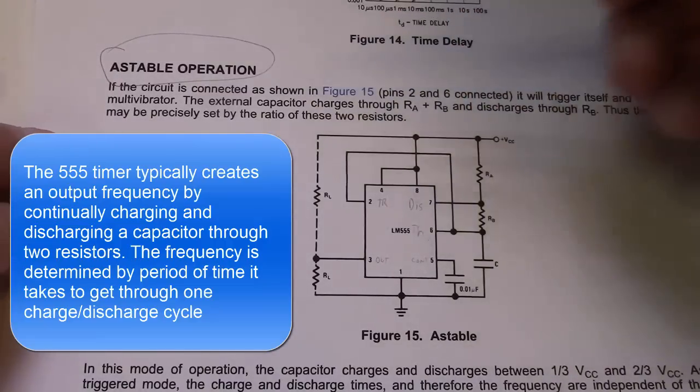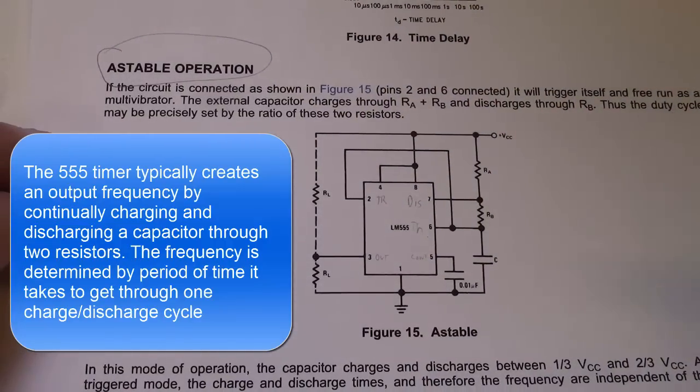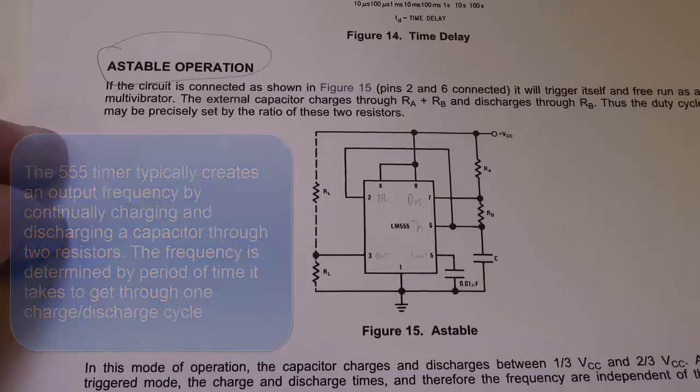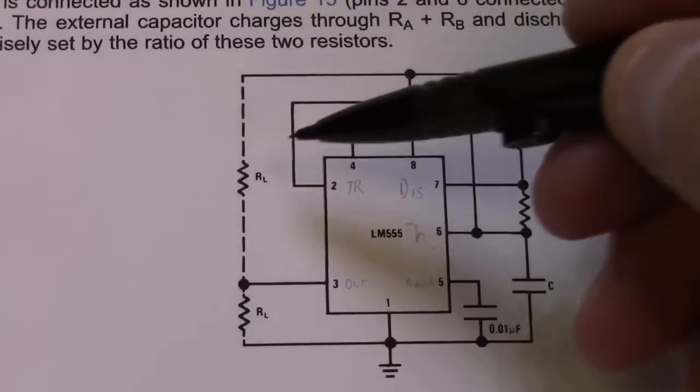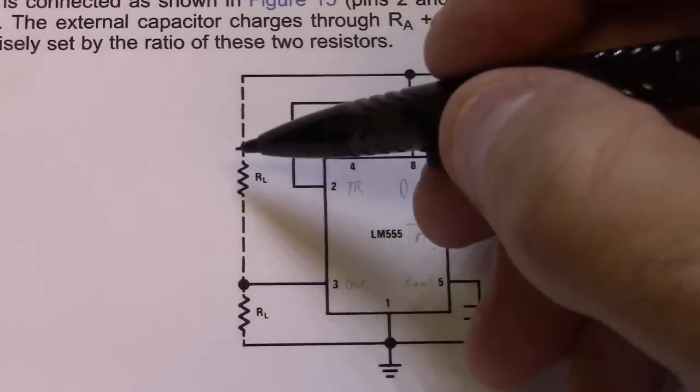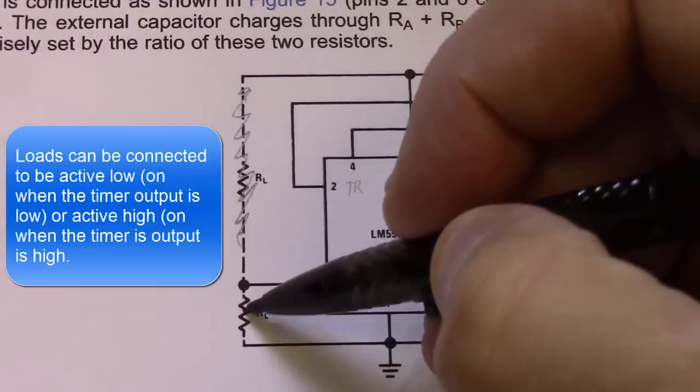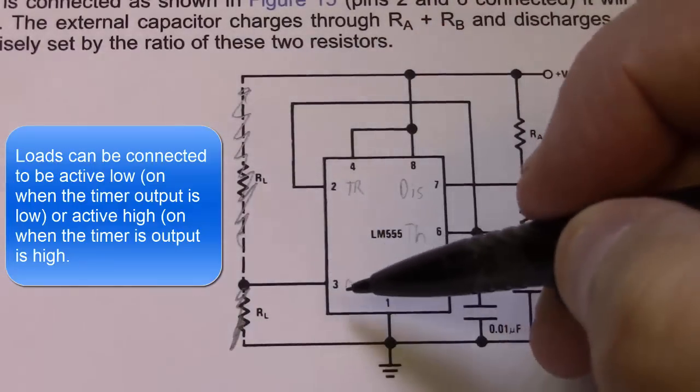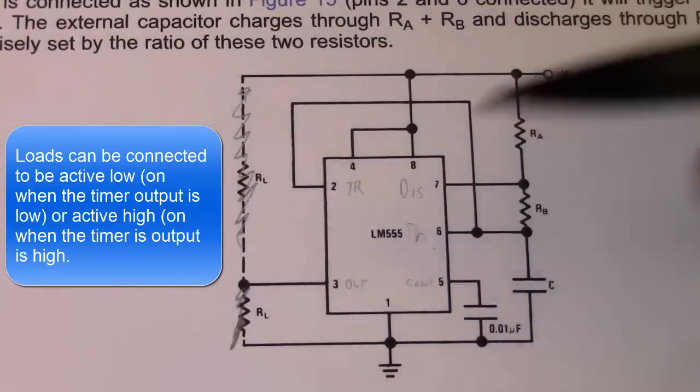This astable operation comes from a datasheet that's been out for at least 20 or 30 years since the chip was developed. When you see people showing a circuit that looks similar to this, it may be missing a few components. Here, for instance, are different ways we can connect our loads, which you don't really have to worry about right now.